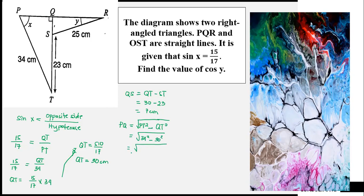34 times 34 equals 1,156 minus 30 times 30 equals 900. Subtract the two, it becomes 256. Get the square root of 256 which equals 16. So, line PQ has a measurement of 16 centimeters.